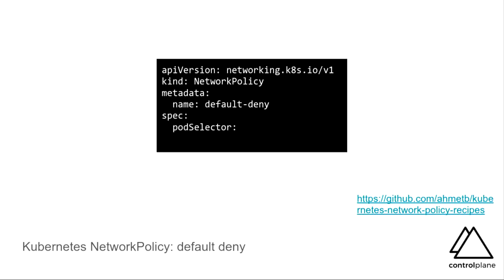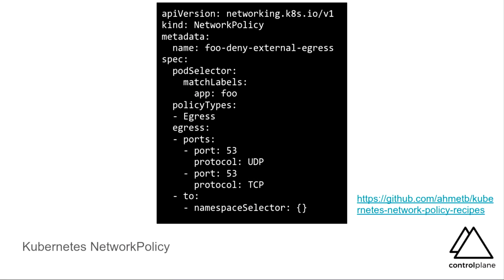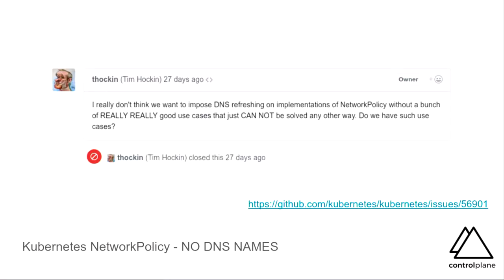Network policy is denied by default — it's fail-closed. I really don't like this; it's effectively a wildcard. I understand why it's fail-closed but it's a poor user experience. This is a network policy denying everything but egress on port 53 for TCP and UDP. DNS is permissible because DNS resolution is non-deterministic — there may be global load balancing, there may be DNS round-robin.